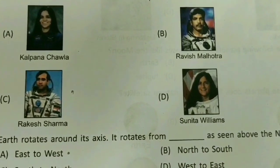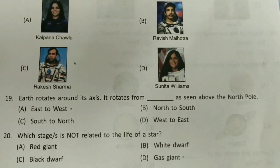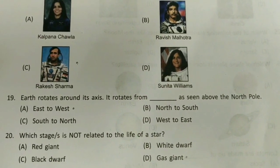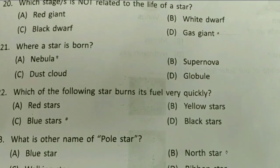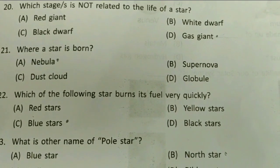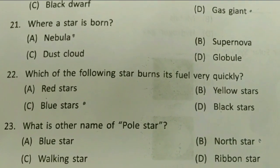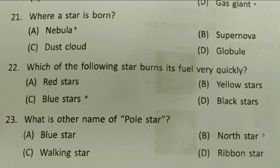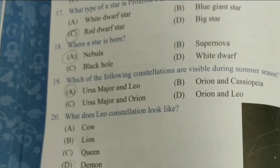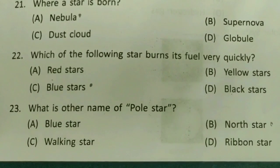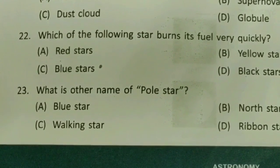Question 18: name the first Indian who traveled into space. The answer is C — Rakesh Sharma. Question 19: Earth rotates around its axis from east to west. Question 20: which stage is not related to the life of a star? The answer is D, gas giant — this is in chapter 6, The Stars. Question 21: where is a star born? In a nebula — again chapter 6. Question 22: which of the following star burns its fuel very quickly? Blue stars — chapter 6, The Stars.